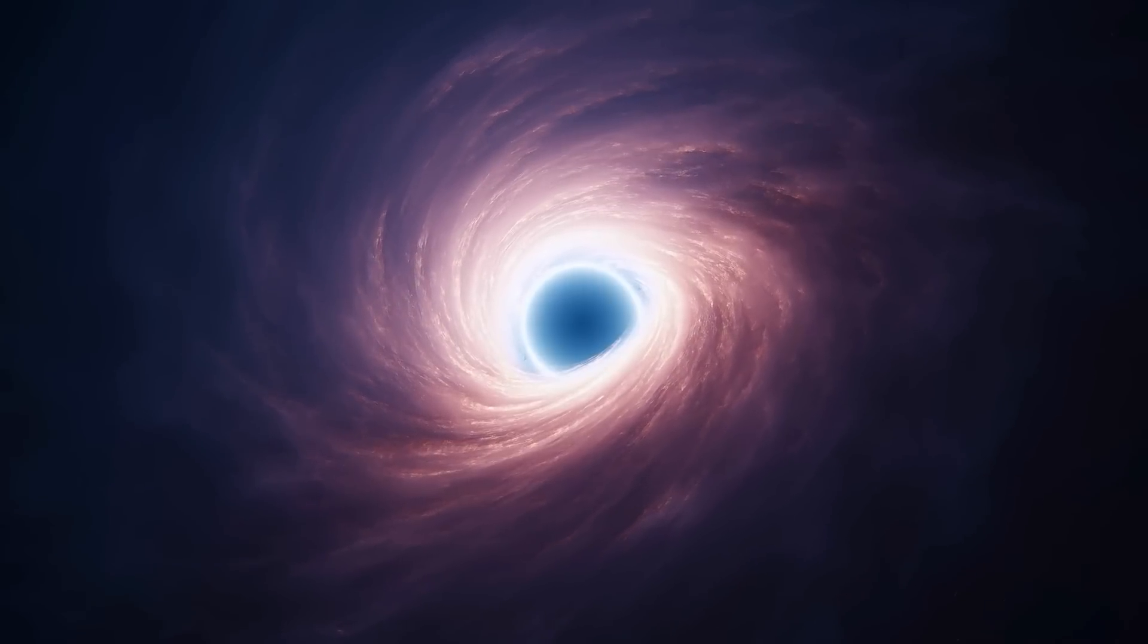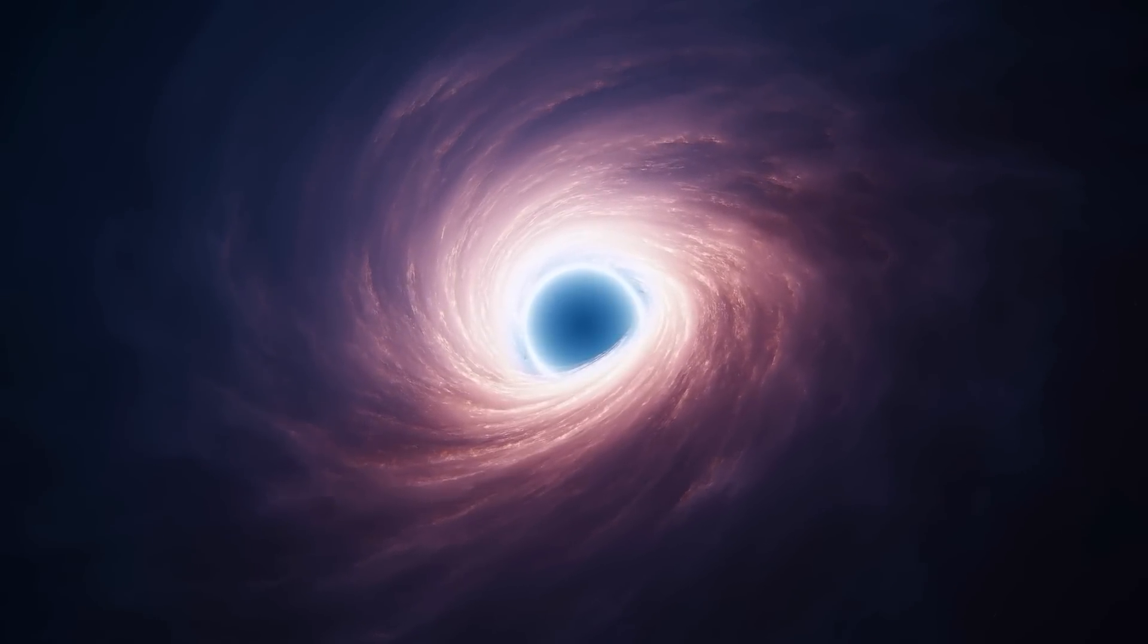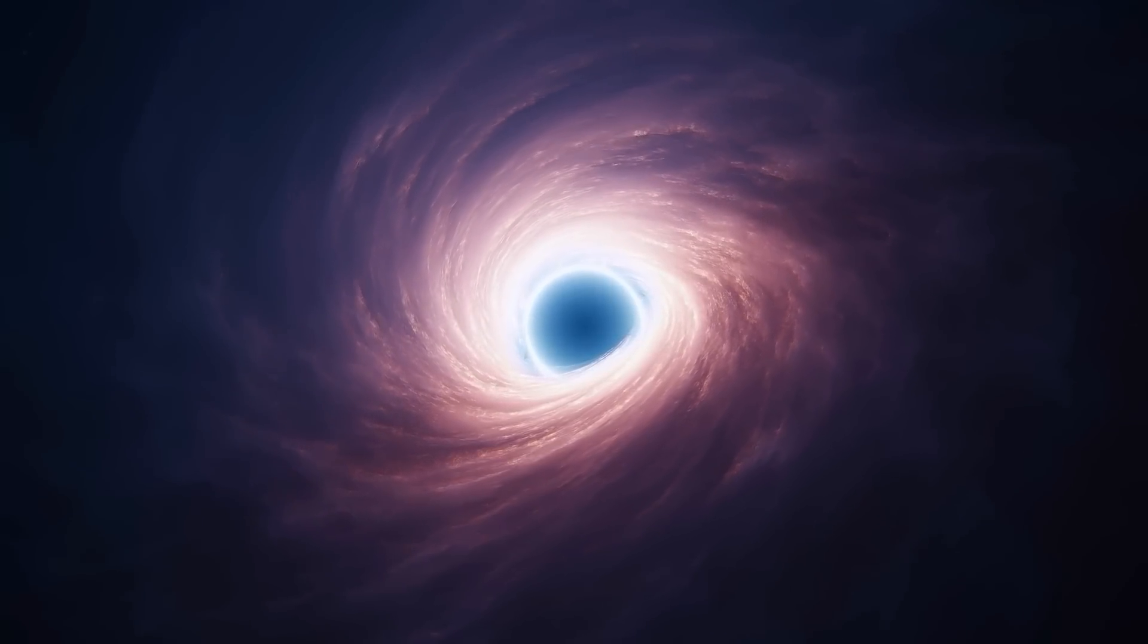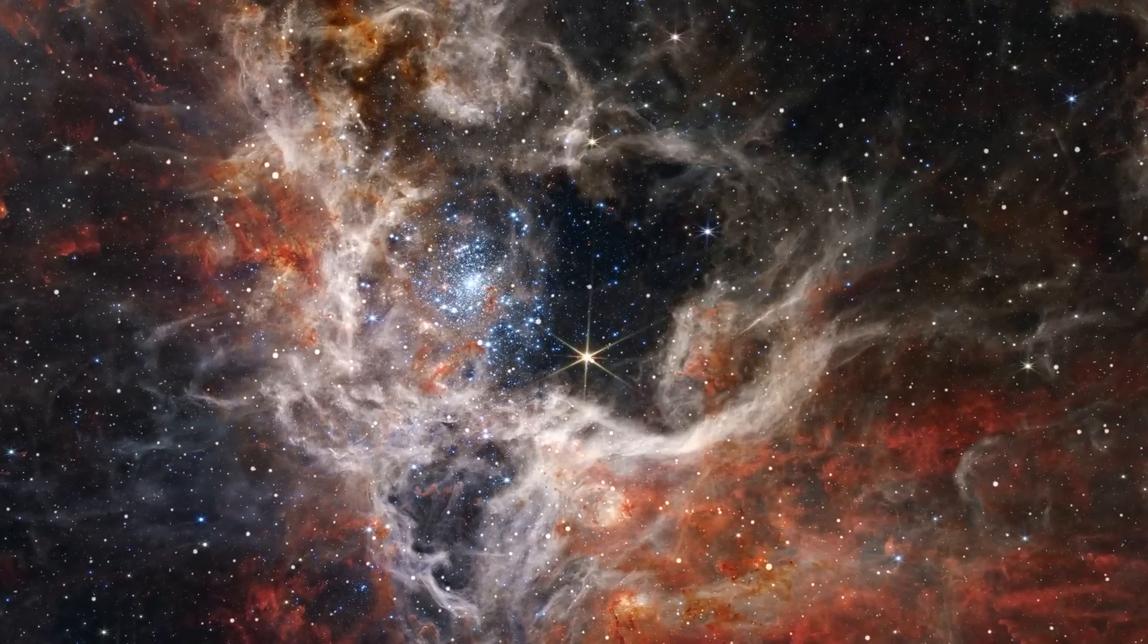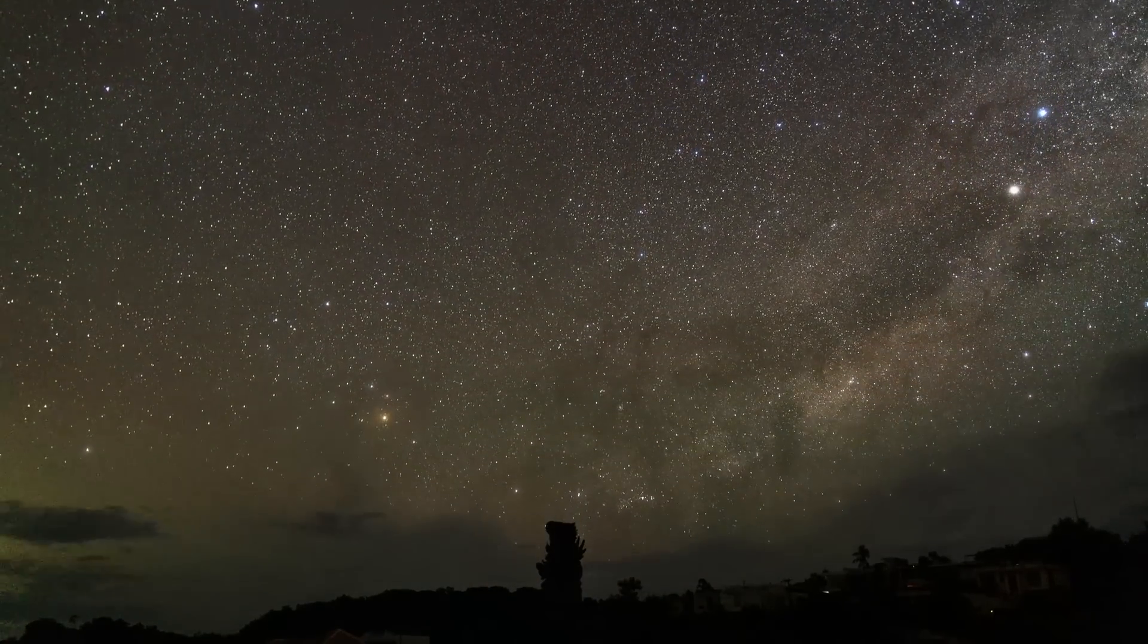When Hubble first imaged the galaxy, scientists did not believe what they were seeing. A blurry patch of light that could only be a galaxy or a very massive black hole with a very bright accretion disk.